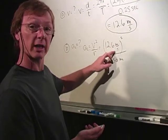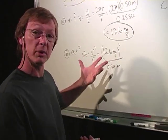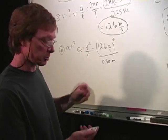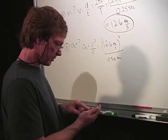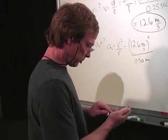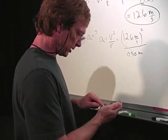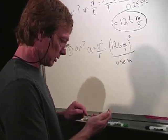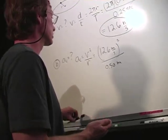That's going to be meters squared per second squared divided by meters, so one of the meters will cancel out. I'll have meters per second squared. Let's see, 12.6 times 12.6 divided by 0.25 equals... whoops, I was off by a factor of 2.